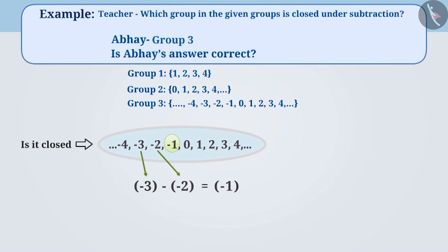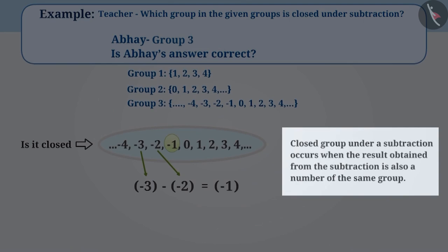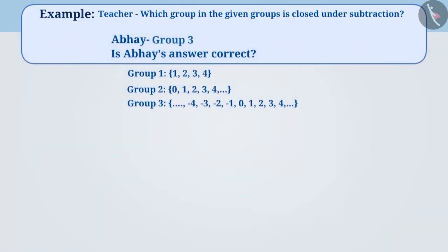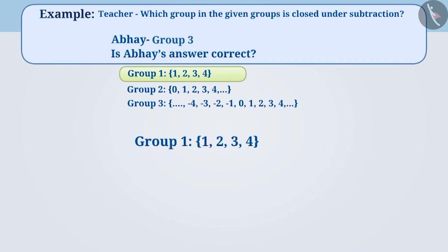In this way, a group is closed under subtraction when the result obtained from the subtraction is also a number of the same group. Let's find out if group 1 is closed under subtraction. For this, we will subtract the numbers of this group to find out if the resulting number is part of the same group.